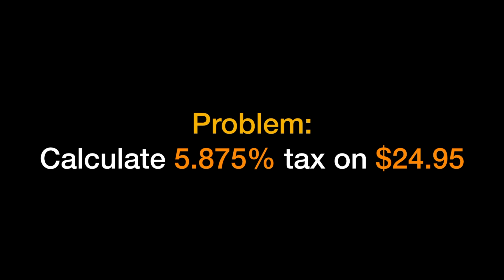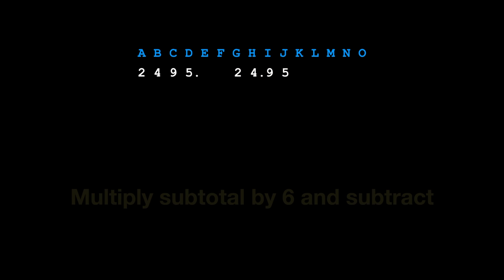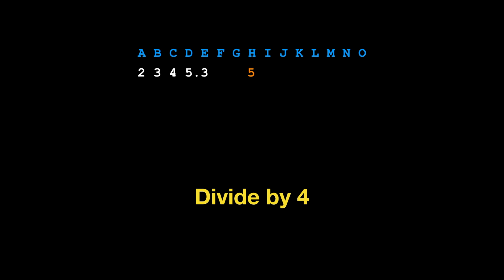The problem: calculate 5.875% tax on $24.95. First, enter the subtotal 24.95. We multiply by 100 by moving the decimal point two places right in our mind. Then we enter the subtotal again several columns to the right as a reference, and multiply it by 6 — entering a 6 as a reminder — and subtract that product from the 24.95 on the left columns. Six times the 9 and six times the 5. That completes the multiply-by-94 step.